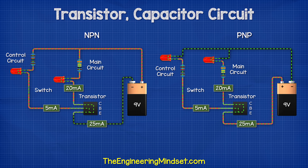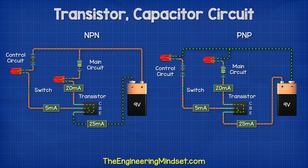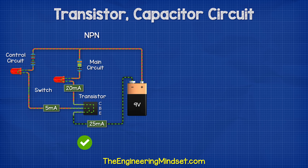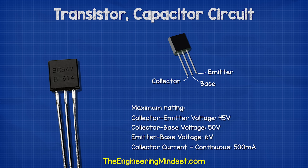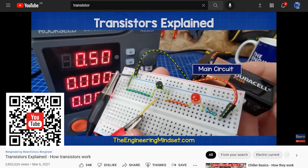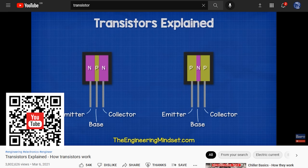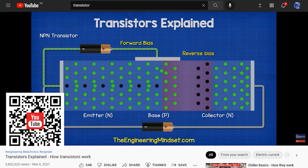For the transistor, we have two types: the NPN and the PNP type. For this application, we will require an NPN transistor. Most standard small transistors will probably work fine for this circuit, but I'm going to use the BC547 as this will suit our voltages and currents very well. By the way, we have covered how transistors work in detail in our previous video — links down below for that.